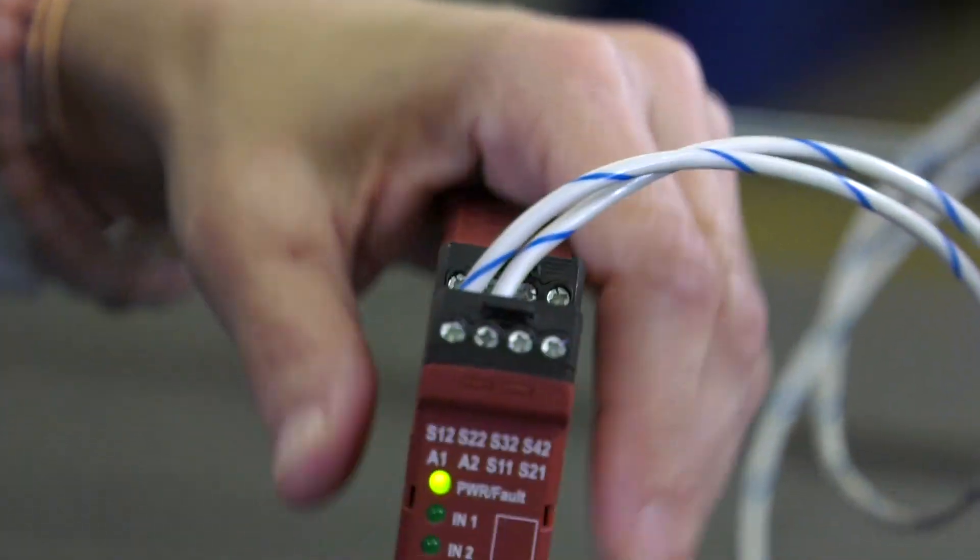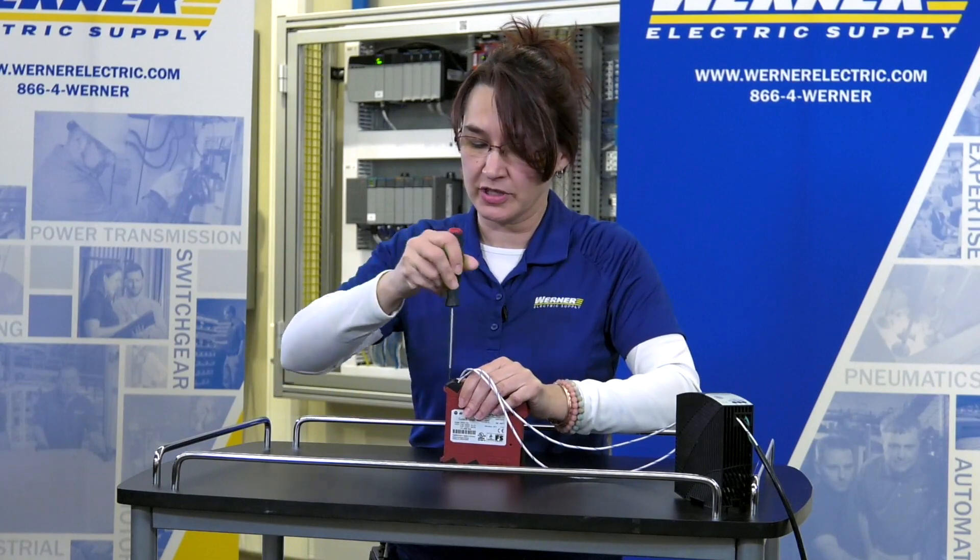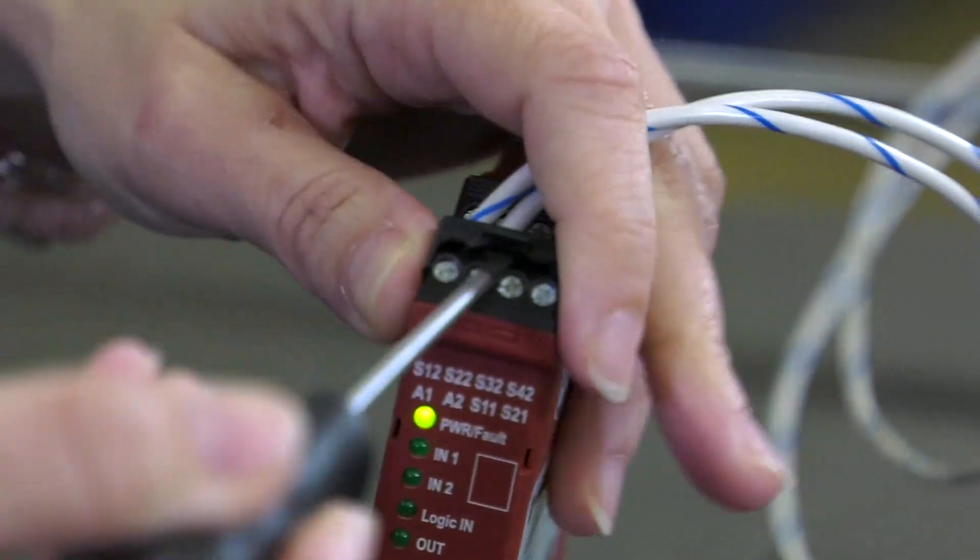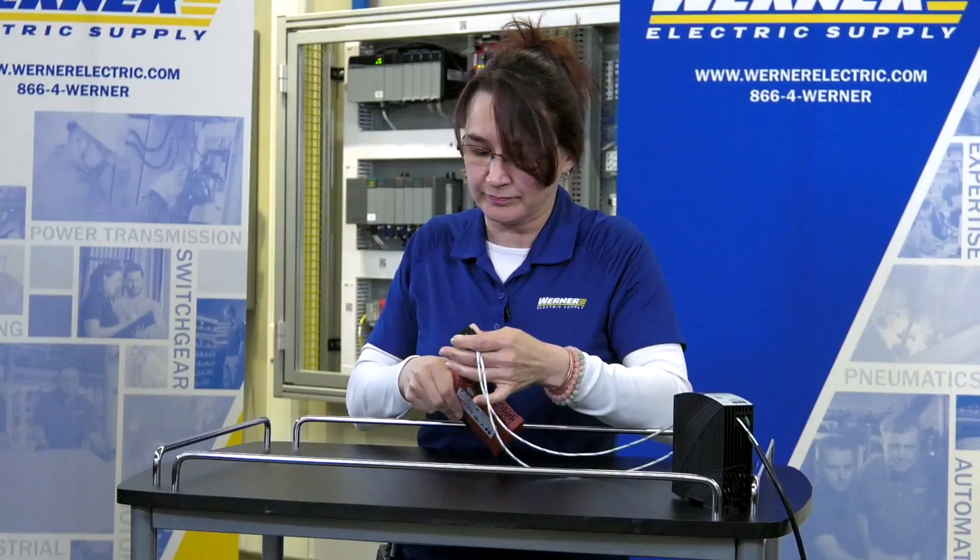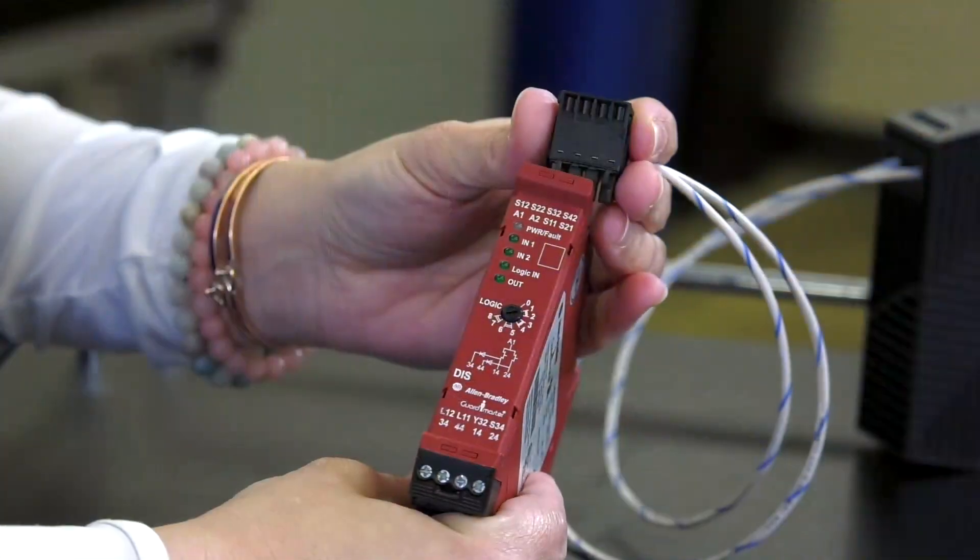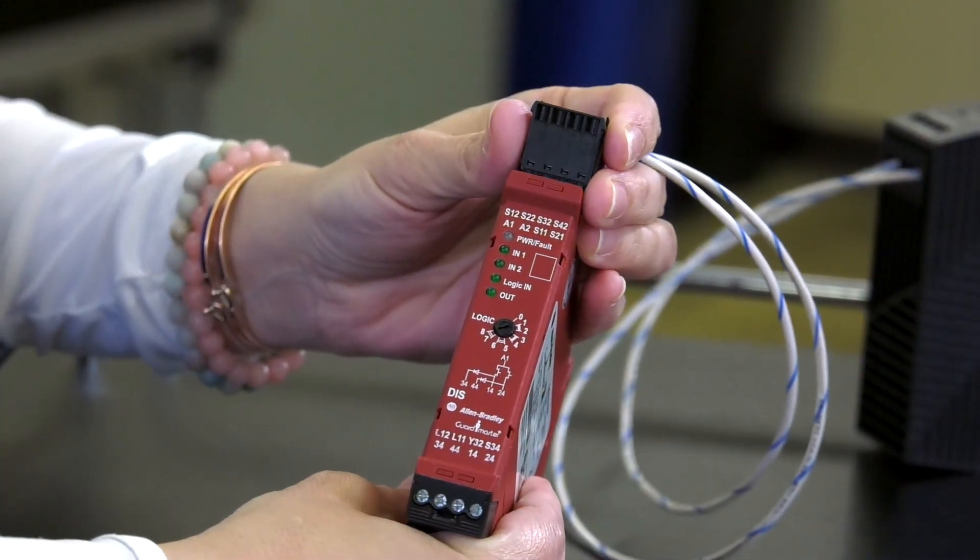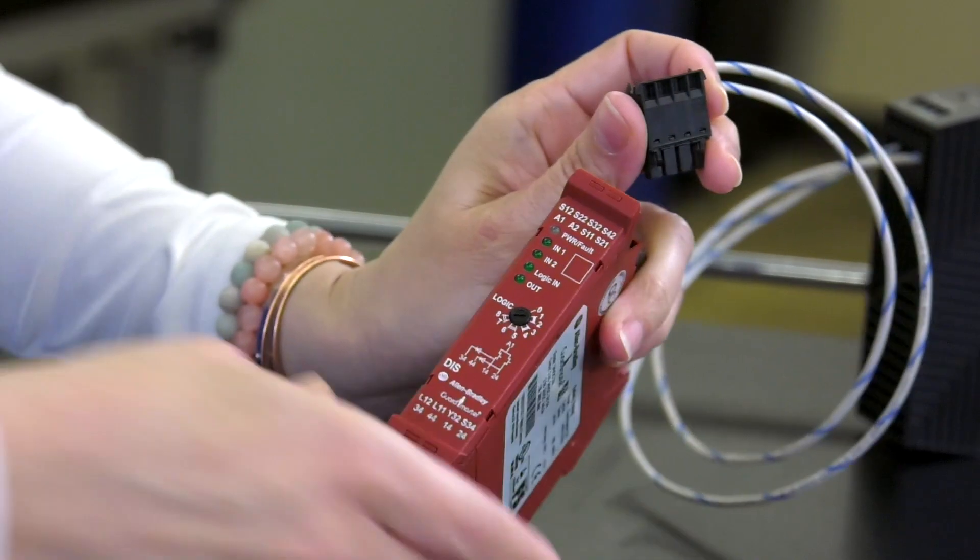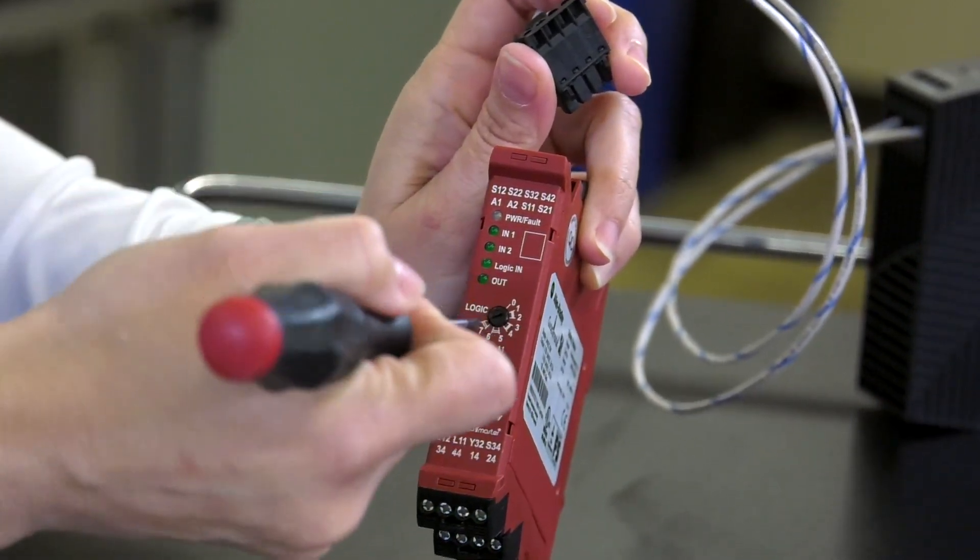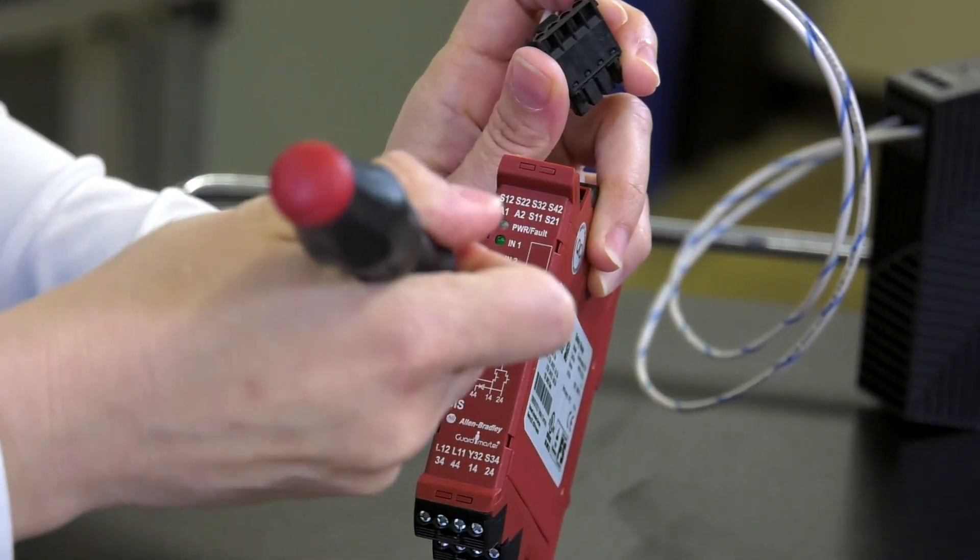I'm going to start by taking the power off of here, so we're just going to pop this off. Okay, so to start the configuration process, or the override process, with the power off, we're going to turn the rotary dial on the front to zero. So I'm going to go ahead and get that at zero.